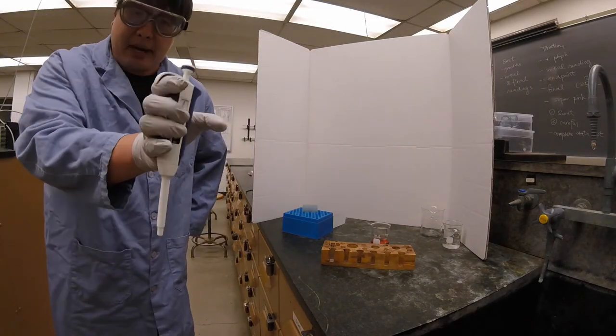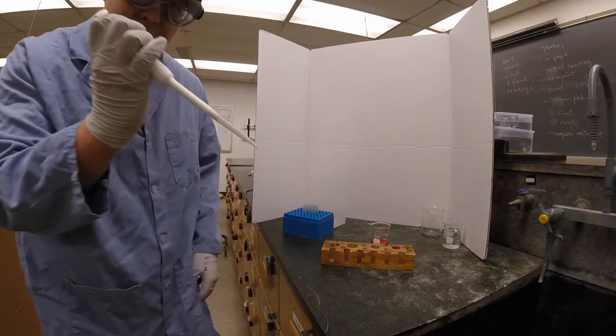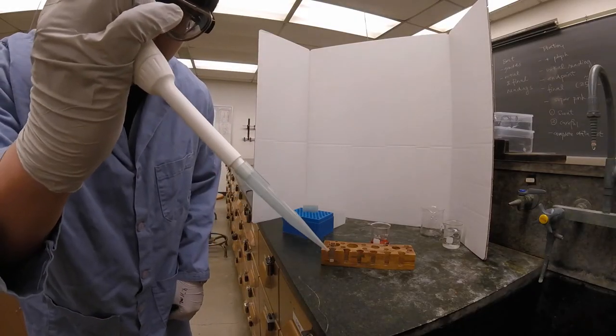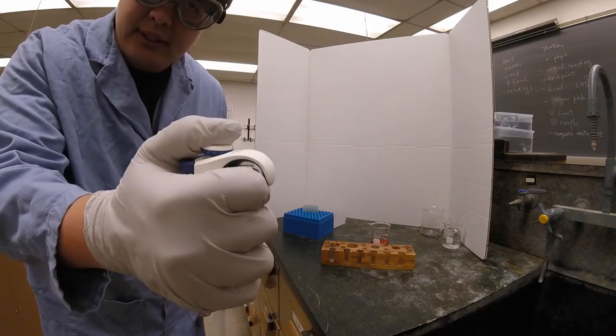So in order to use a micropipette, first you want to grab a tip over here. So now you can see that there's a tip attached to the micropipette, and then you want to go down to the first stop, like this.